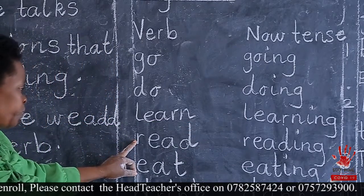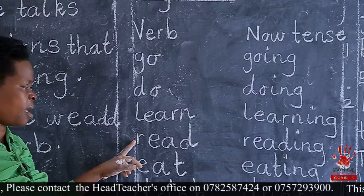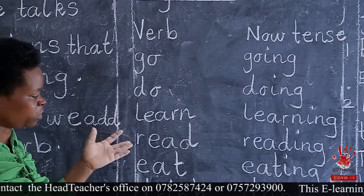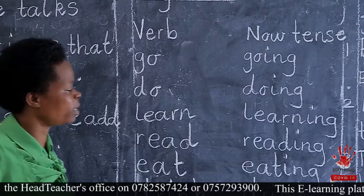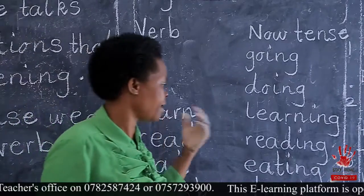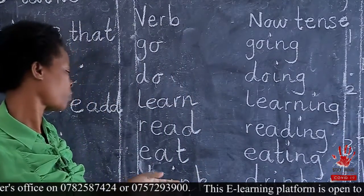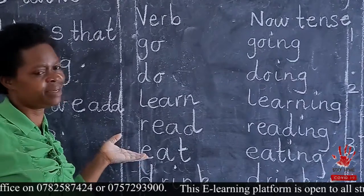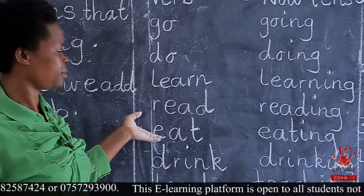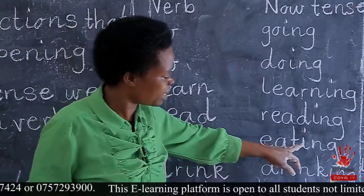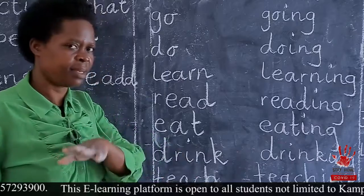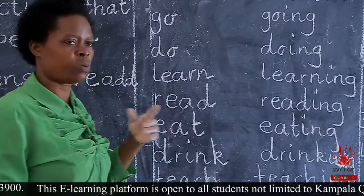We have read. Can you spell read? R-E-A-D. This is the original verb, the original form. Then in the now tense, you are going to put I-N-G. From read, you say I am reading. Then we have eat. Can you spell eat? E-A-T. You put I-N-G — it will be eating. What you are doing.